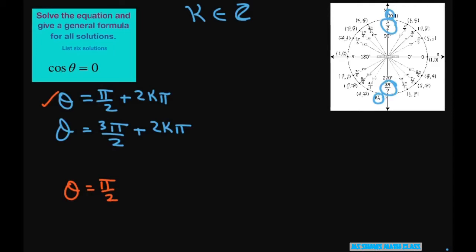If k is 1, you're going to get θ = π/2 + 2π. Now for 2π, if k is 1, we have to add this.